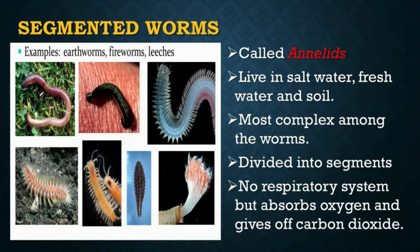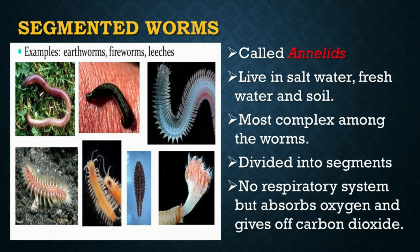Segmented worms are also called annelids. They live in salt water, fresh water, and in the soil. They are the most complex among the worms. Their bodies are divided into segments. Examples of animals in this group are earthworms and leeches. The earthworm has no respiratory system but absorbs oxygen and gives off carbon dioxide through its thin skin, which must be kept moist.